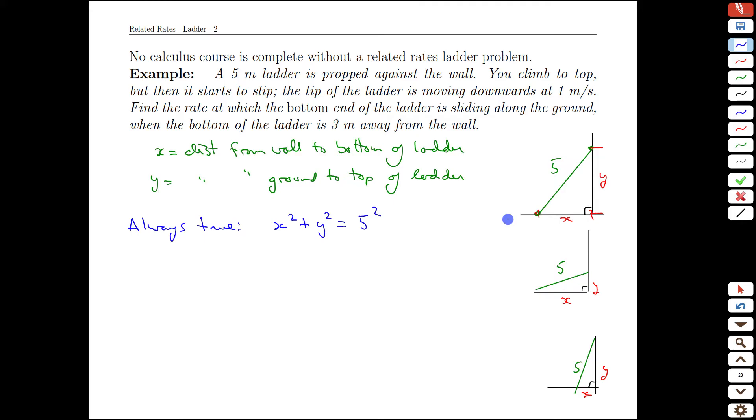Now what do we want and what do we have? We know that dy/dt, which is the rate at which the tip of the ladder is moving, is going to be one meter per second. Being a little bit careful about that, if this ladder tip is moving downwards, then this length y is getting smaller. So be careful with your signs. dy/dt will be negative one meter per second. What do we want? We want dx/dt, which is how quickly the base of the ladder is moving outwards, or how quickly the distance x is changing over time. We now have everything we need.